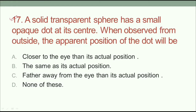Question number 17: a solid transparent sphere has a small opaque dot at its center. When observed from outside, the apparent position of the dot will be: A) closer to the eye than its actual position, B) the same as its actual position, C) farther away from the eye than its actual position. My answer will be option B — the same as its actual position.